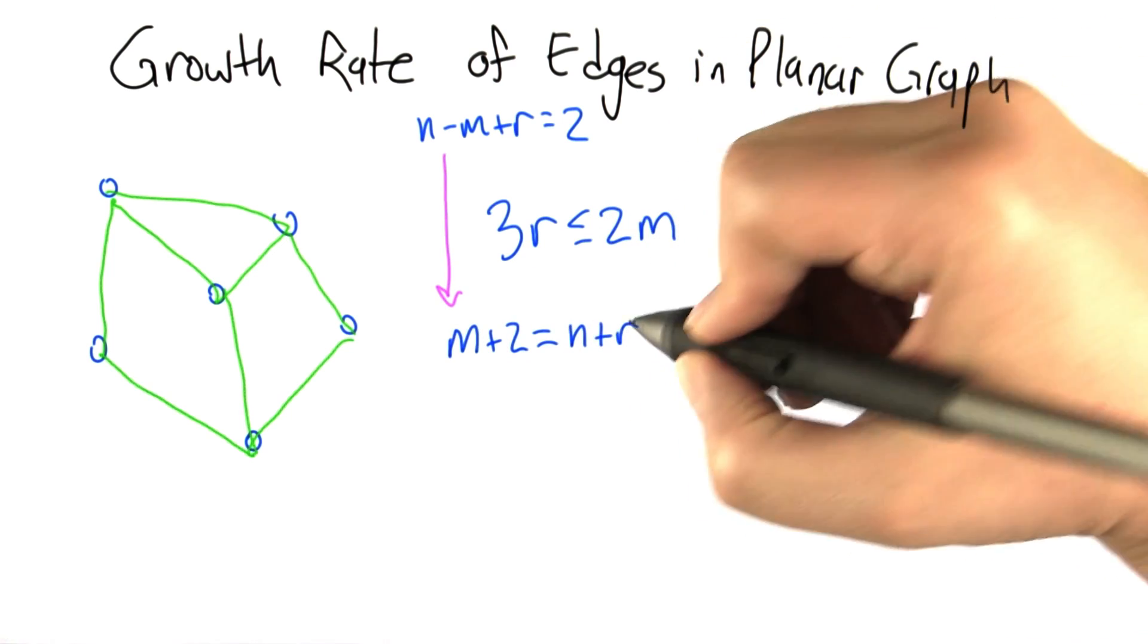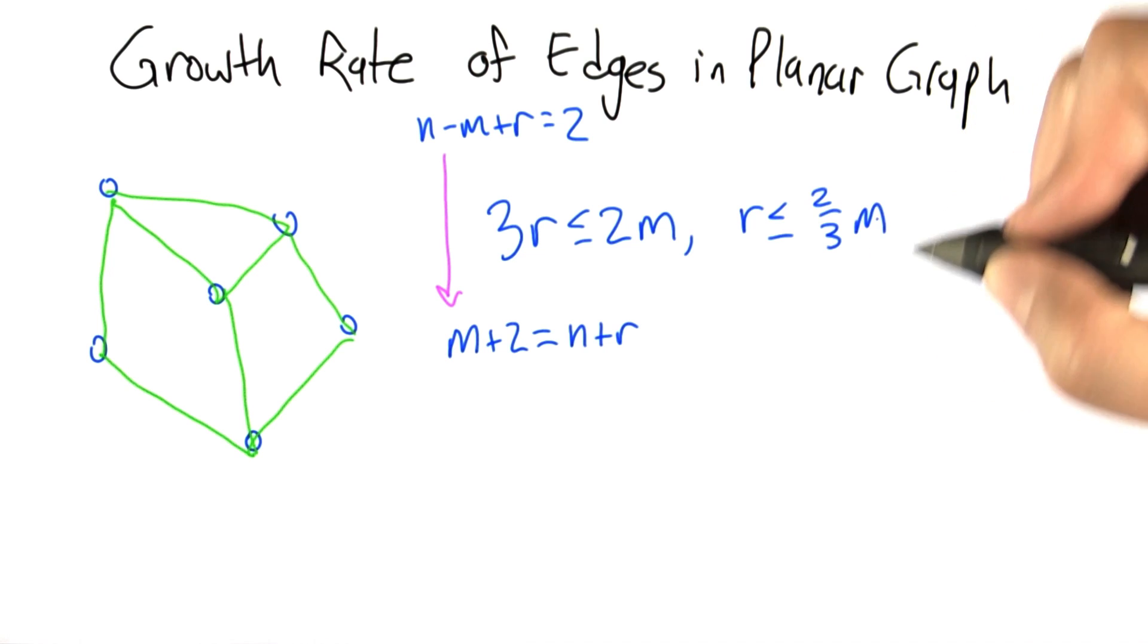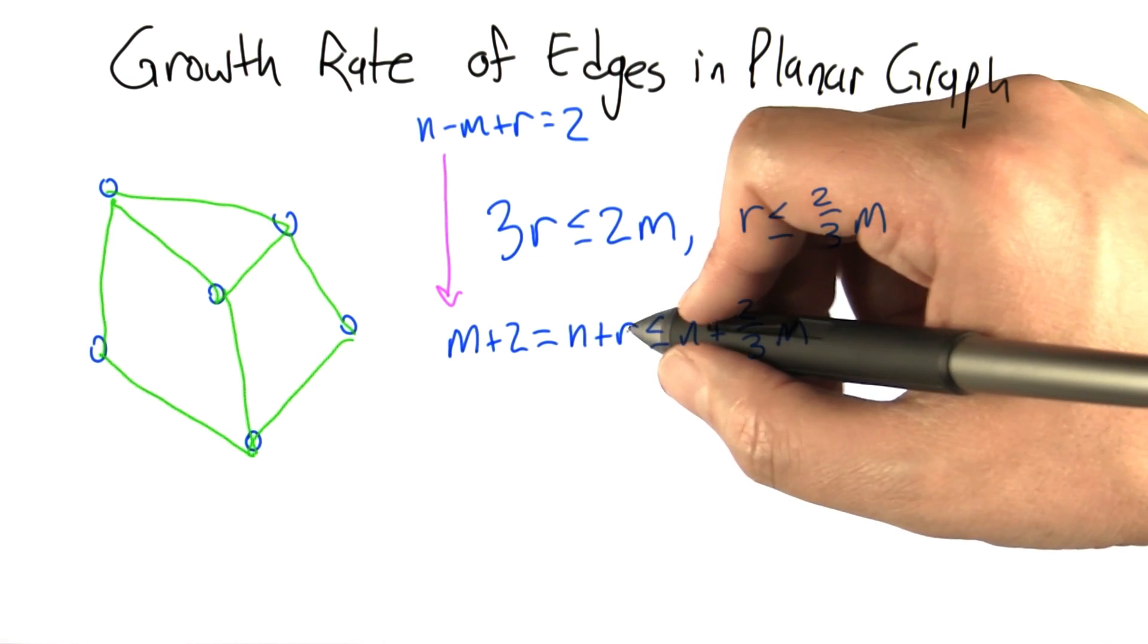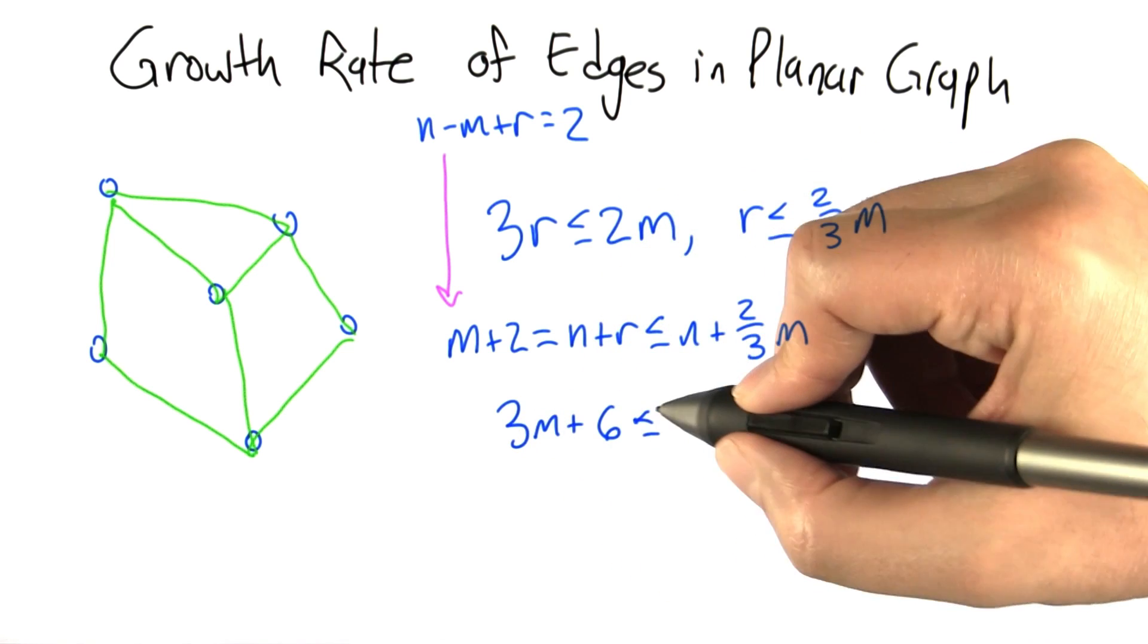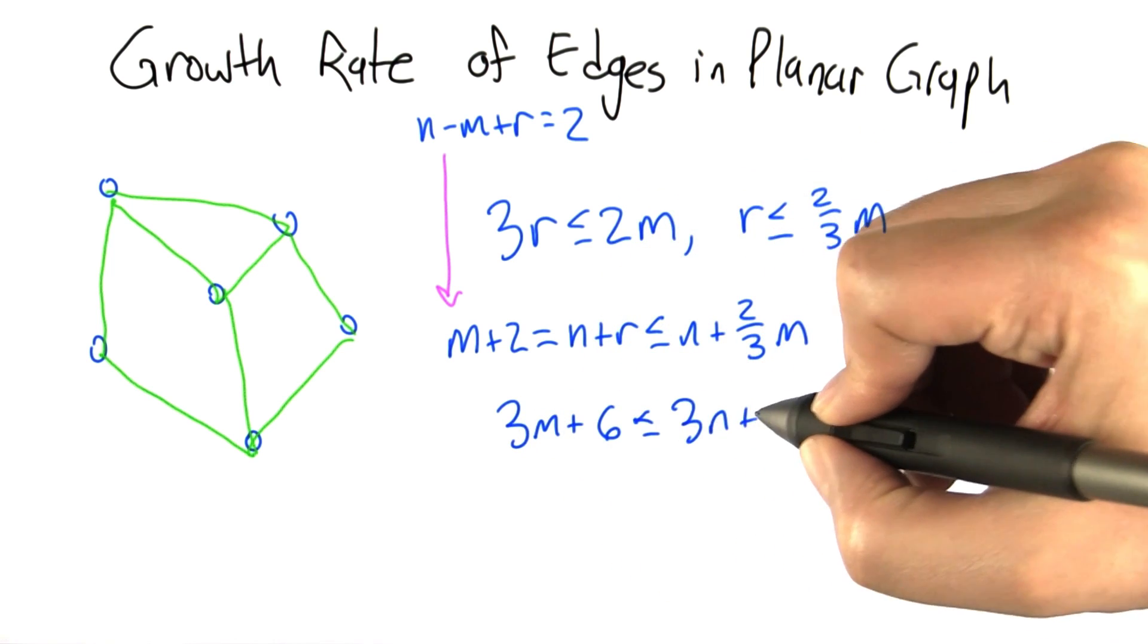So rewriting Euler's formula, we have this. Rewriting this equation, we have this. Substituting in, we have this. Let's multiply through by 3. We get 3m plus 6 is less than or equal to 3n plus 2m.